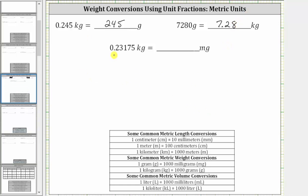For the last example, we want to convert 0.23175 kilograms to milligrams. We first write the given weight as a fraction with a denominator of one. Looking at our conversions, there is no direct conversion from kilograms to milligrams. We will first have to convert kilograms to grams using the conversion one kilogram equals 1,000 grams, and then convert grams to milligrams using the conversion one gram equals 1,000 milligrams. Because we have to use two conversions, we will have two unit fractions.